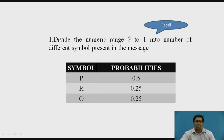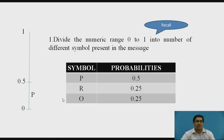Why do we divide the numeric range 0 to 1? Because if you observe the table, the property of probabilities is that they always lie between 0 and 1. Therefore, we divide the symbols into the range 0 to 1. With this diagrammatic representation: P is present at 0 to 0.5, R is present from 0.5 to 0.75, and O is present from 0.75 to 1.